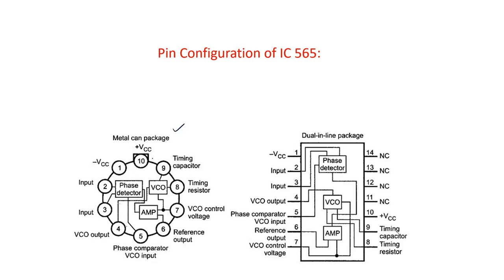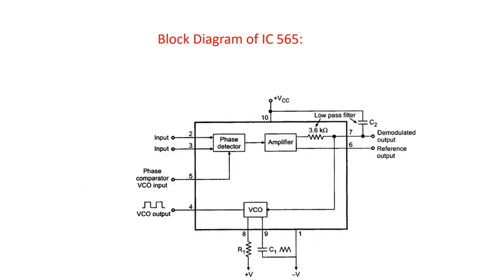If we consider the SC/NE 565, it is available in two forms: one is a metal can package with 10 pins, or dual inline package DIP with 14 pins. You can see that the internal blocks are phase detector, VCO, and amplifier. The low pass filter has to be connected externally using R and C components. In the detailed block diagram of the 565 IC, there is a 3.6 kilo ohm resistor, which acts as R of the low pass filter. This R and C2 form the low pass filter.